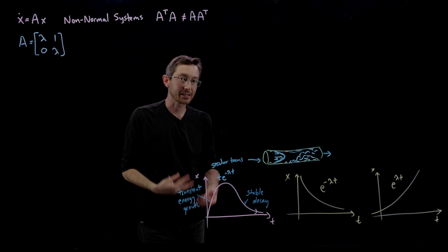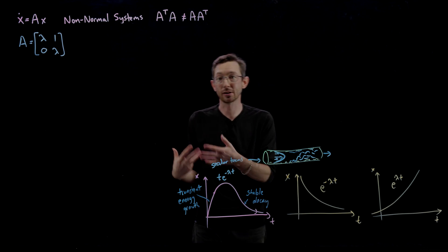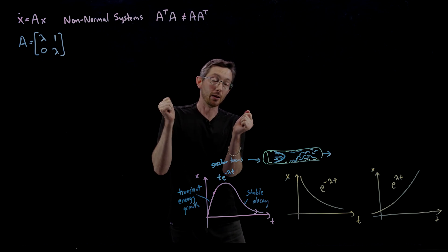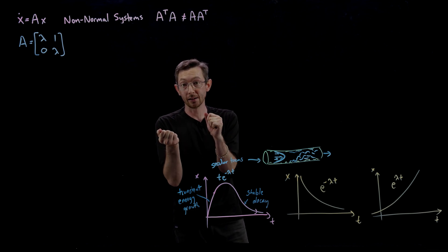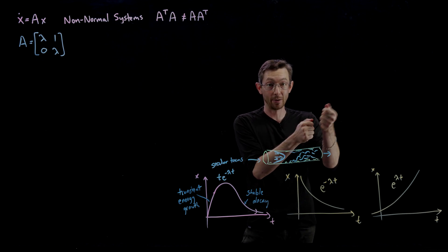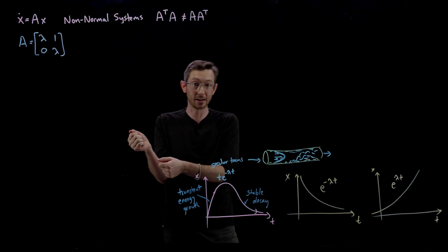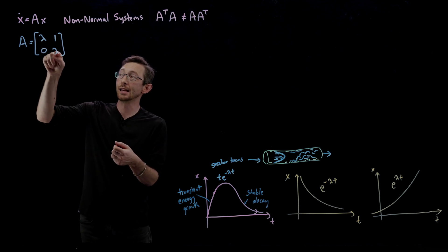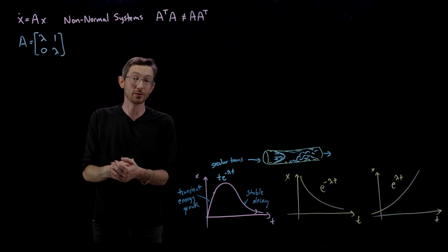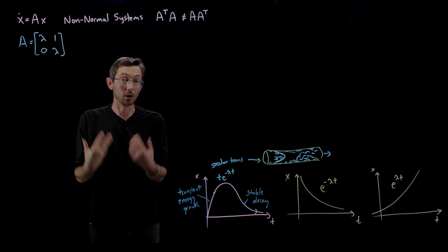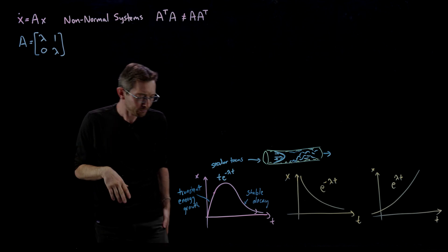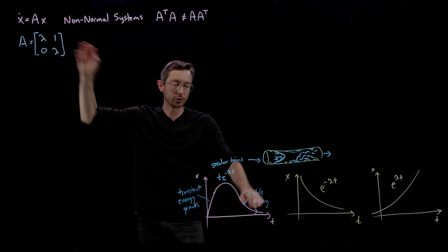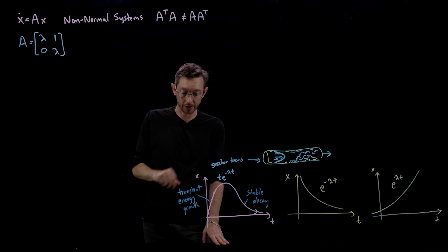Previously I showed you matrices A with distinct eigenvalues — maybe one positive and one negative, two real and distinct, two negative and distinct, or two complex conjugates. Here, both eigenvalues of the system are the same value λ, so they're not distinct anymore. And in this case we get this interesting transient energy growth. I'm going to show you how to derive that today.